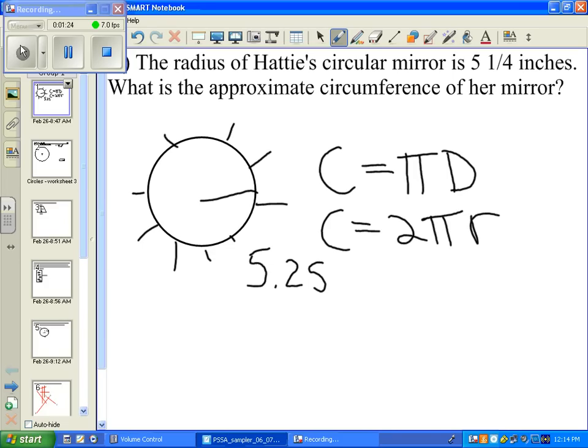Well, we're given the radius here. Not a problem. So we'll use this formula right here. So 2 pi is 6.28. 2 times 3.14 is 6.28. We'll multiply that times 5.25.